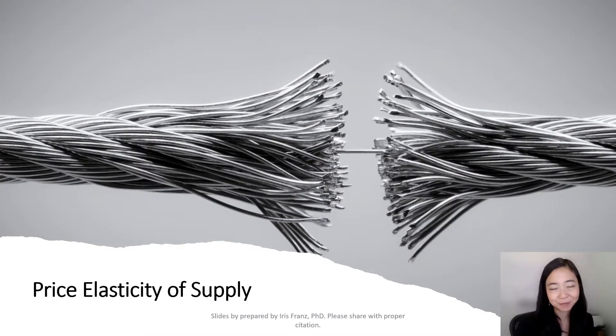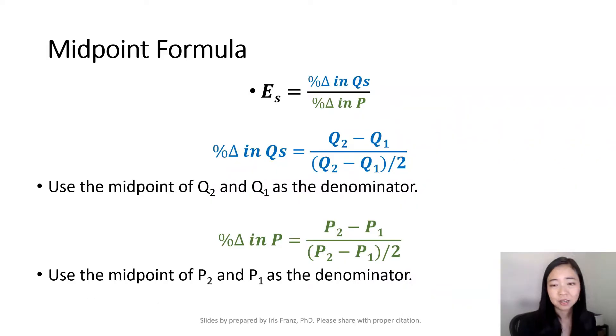Hello everyone, Iris Franz here, and today we're going to talk about price elasticity of supply. By definition, price elasticity of supply is percentage change in quantity supplied divided by percentage change in price.